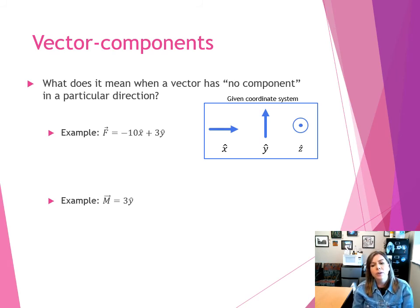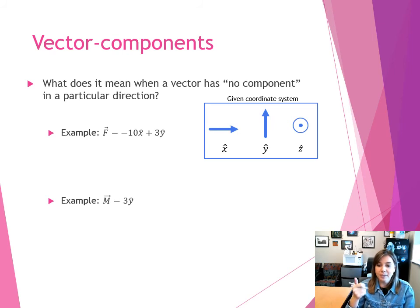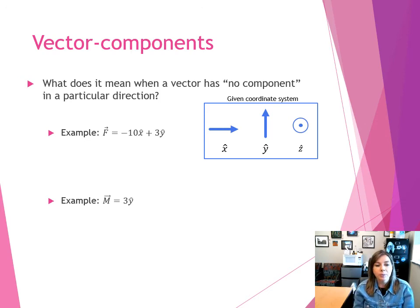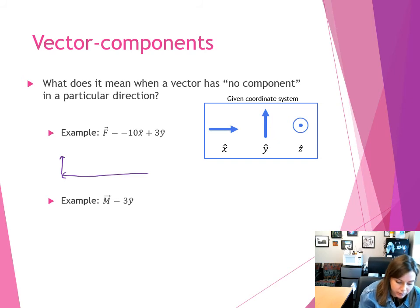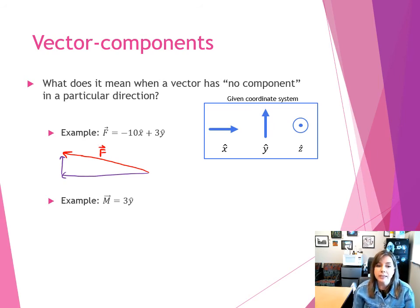What happens when a vector has no component along a particular direction? In the clock example, vector p lived in the plane of the board — it had an x component and a y component, but no z component because it wasn't coming out of or going into the board. Looking at example vector f, it has an x component (negative 10 in x) and a y component (positive 3 in y) but no z component, meaning vector f lives in the xy plane.